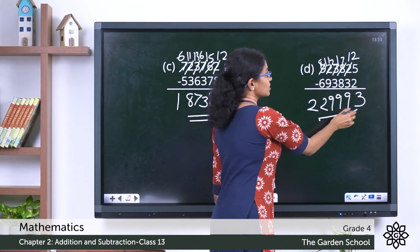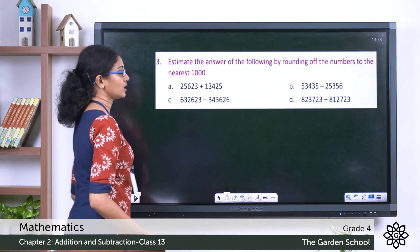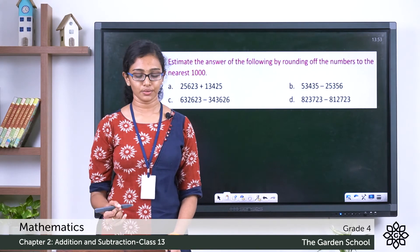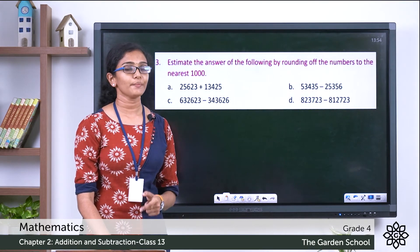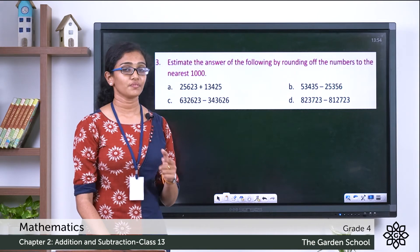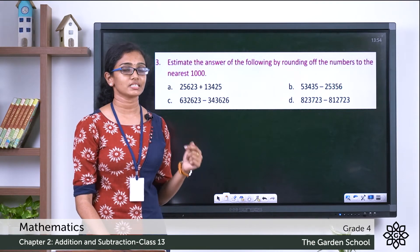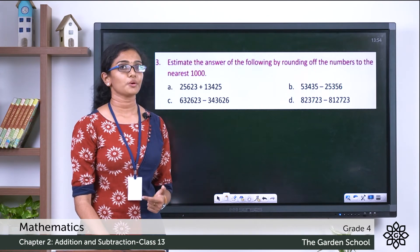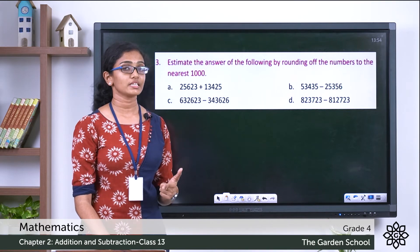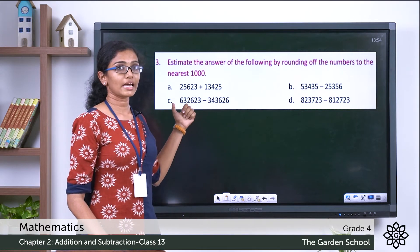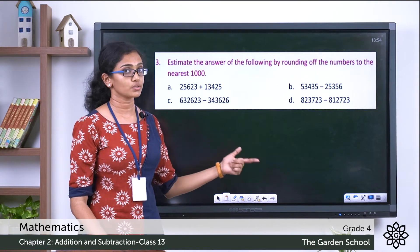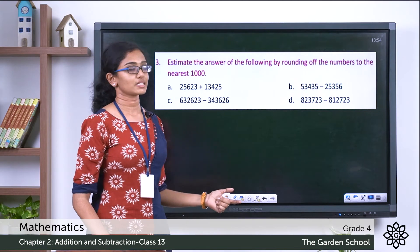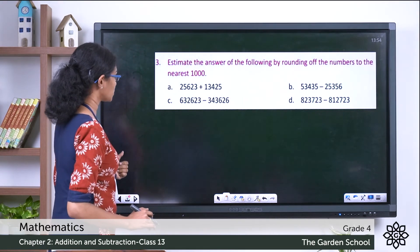Now let's discuss question number three: estimate the answer by rounding off the numbers to the nearest thousand. To find the estimated sum, we first round off each addend to the nearest ten, hundred, or thousand, then add the rounded addends. For the estimated difference, we round off both the minuend and subtrahend to the nearest ten, hundred, or thousand, then subtract to get the estimated difference.